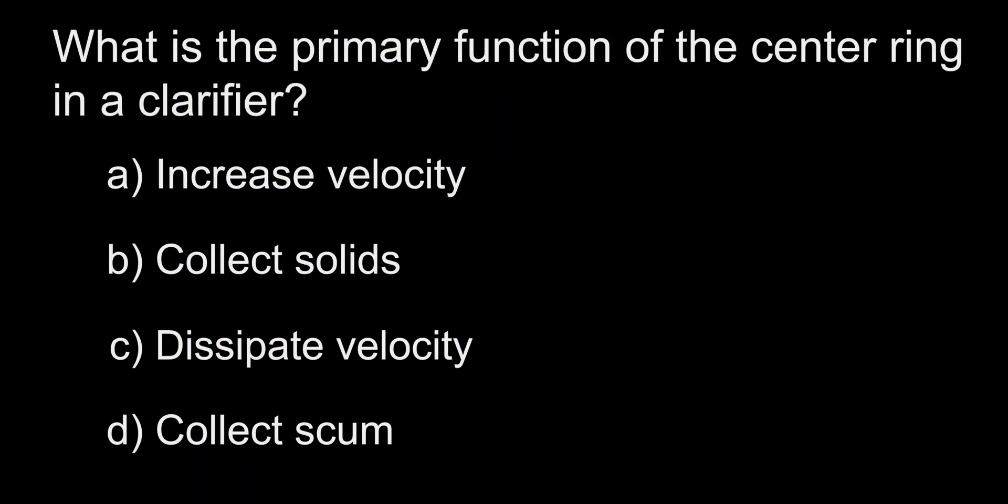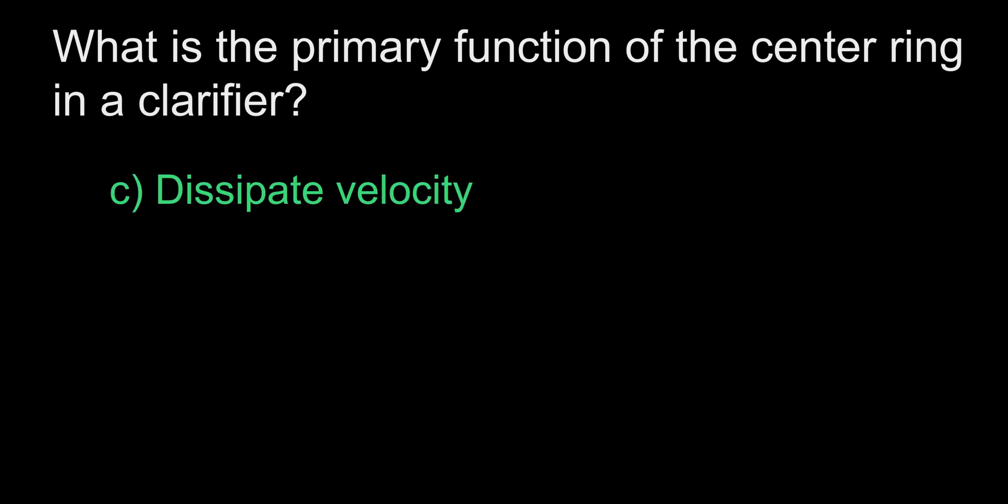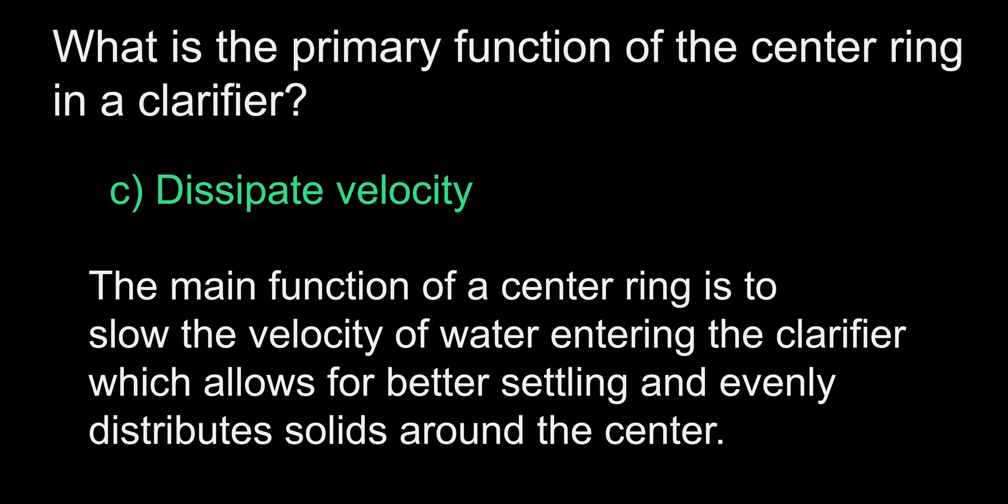What is the primary function of the center ring in a clarifier? A. Increase velocity. B. Collect solids. C. Dissipate velocity. D. Collect scum. The answer is C, dissipate velocity. The main function of the center ring is to slow the velocity of water entering the clarifier. This improves settling and reduces short-circuiting within the clarifier.